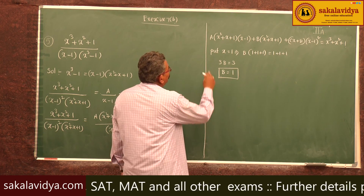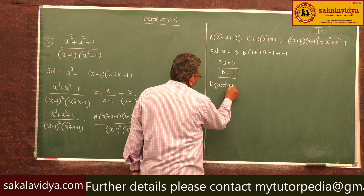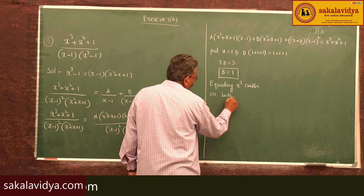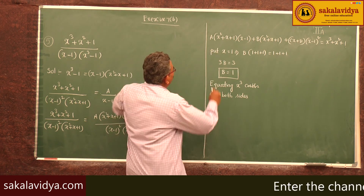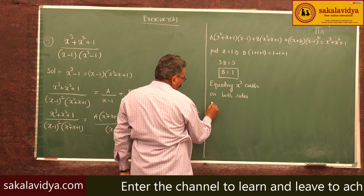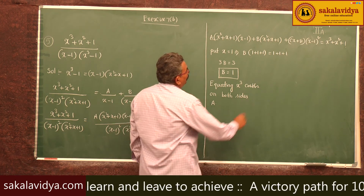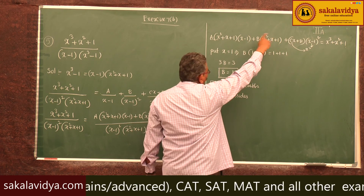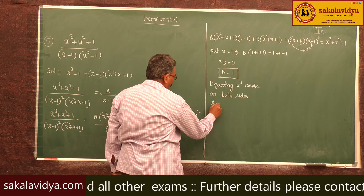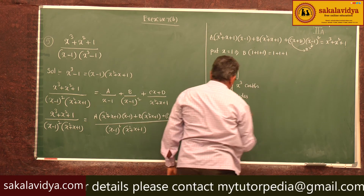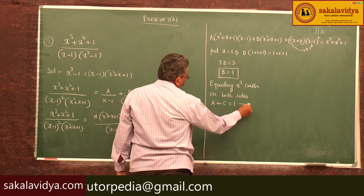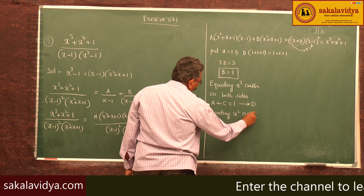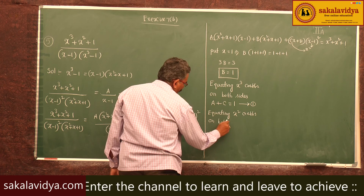Now equating x³ coefficients on both sides: from A(x-1)(x² + x + 1) we get x³ coefficient A, and from Cx(x-1)² we get x³ coefficient C. So A + C = 1. Call this equation 1.